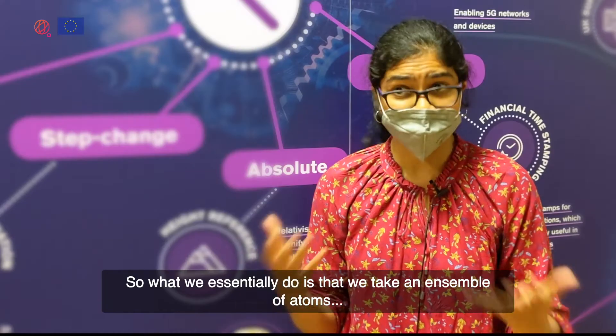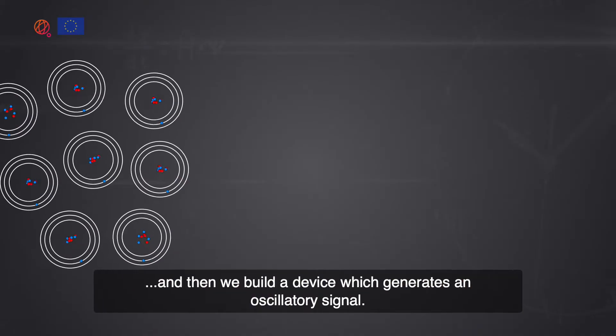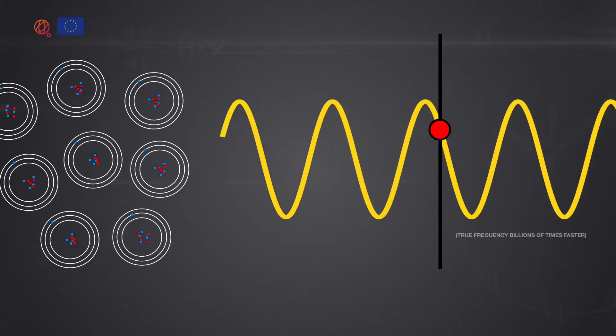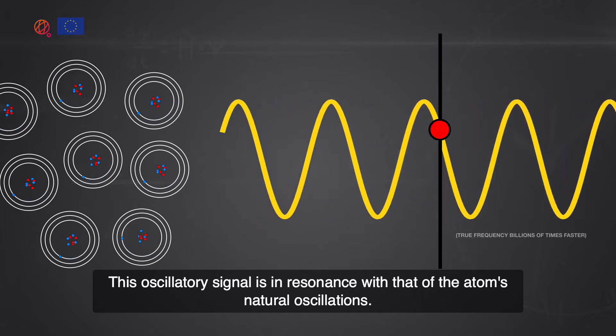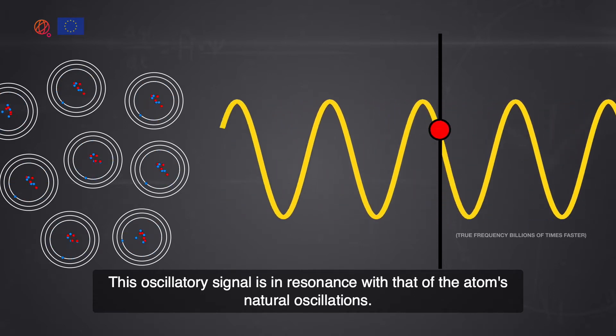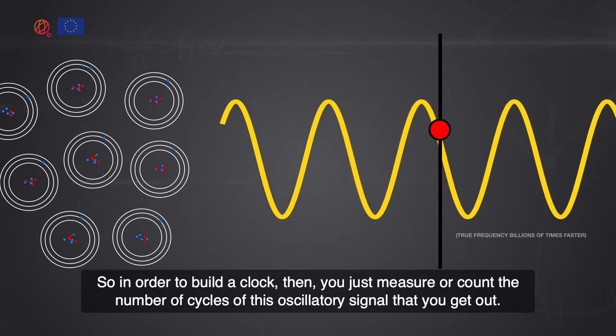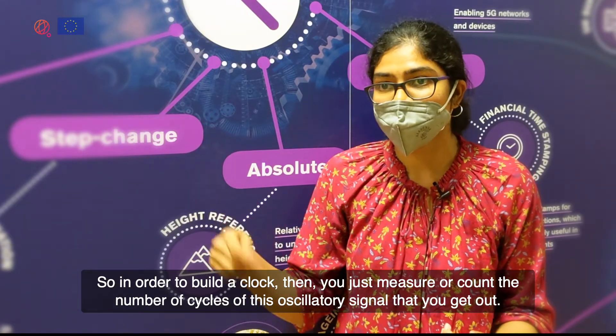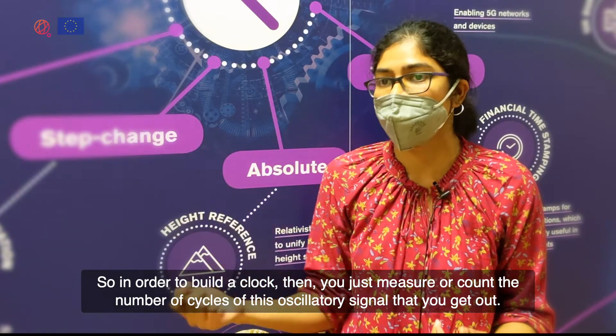What we essentially do is that we take an ensemble of atoms and then we build a device which generates an oscillatory signal. This oscillatory signal is in resonance with that of the atom's natural oscillations. In order to build a clock, you just measure or count the number of cycles of this oscillatory signal that you get out.